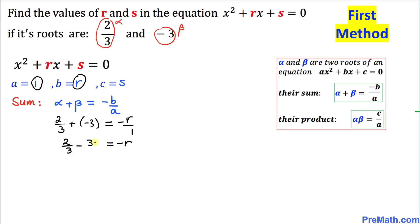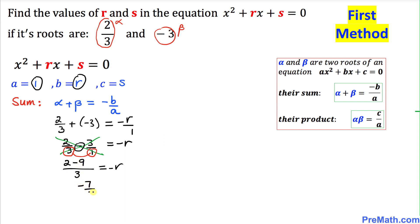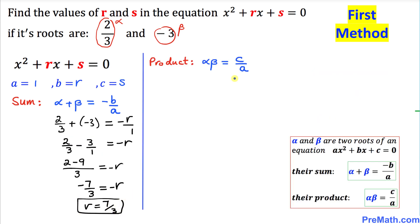Now let's simplify the left hand side. I can make 3 a fraction by putting 1 underneath and simply cross multiply. 2 times 1 is 2, minus 3 times 3 is 9, divided by 3 times 1 which is 3. That gives us negative 7 over 3 equal to negative r, and since negative and negative cancel out, our r value is going to be 7/3.